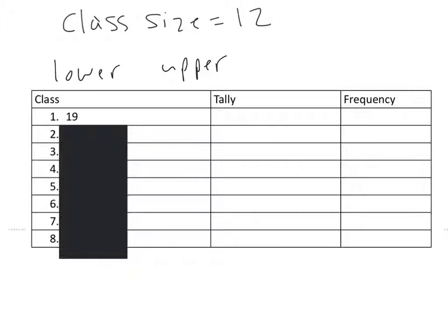Now to find the lowest number in class 2, all I'm going to do is take that 19 and I'm going to add my class width to it. So 19 plus 12, which is going to give me 31. So now I know that class 2's lower limit will be 31.